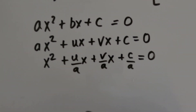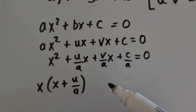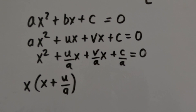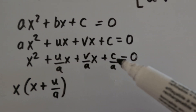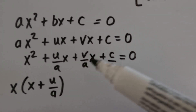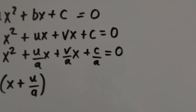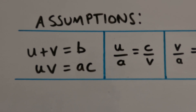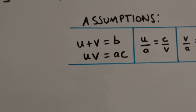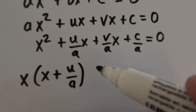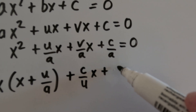Now I want to try and factorize this. Let's put x outside and then we have x plus u over a. If this factorization method works, that means we're going to have this as a factor here. The only problem is this involves u while the remaining term involves v. But we can sort that out — we can make it involve u. Looking at our assumption uv equals ac, v over a is equal to c over u. That's one of our assumptions we have to use at some point, and we're going to be using it here. So let's change that: v over a equals c over u times x plus c over a.